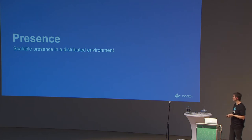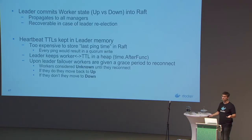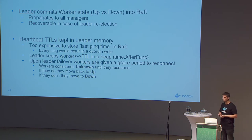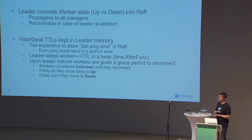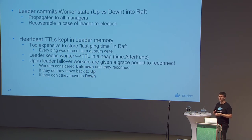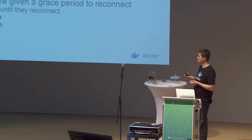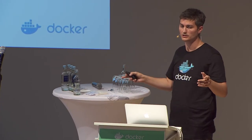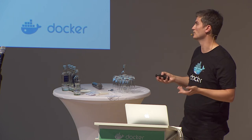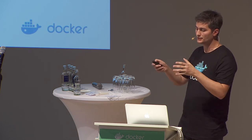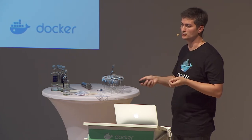On the last topic: presence on a distributed environment is hard — everyone has to agree on who's up and who's down. We rely on Raft for some of that. The SwarmKit leader is aware of the state of every node and commits that to Raft, so it spreads across every manager and they agree — consensus on who's up and who's down. In case the leader goes down, a new one is elected and resumes from there, already knowing which machines were down at election time.